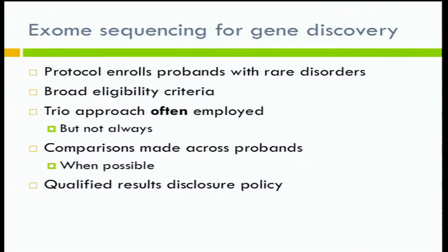As Les mentioned earlier, for one of the disorders we studied, we were able to find the causative variant using just one trio. We employ a qualified results disclosure policy. I do think this protocol falls more in that third category Sarah was mentioning, where we have a fairly robust results disclosure policy.